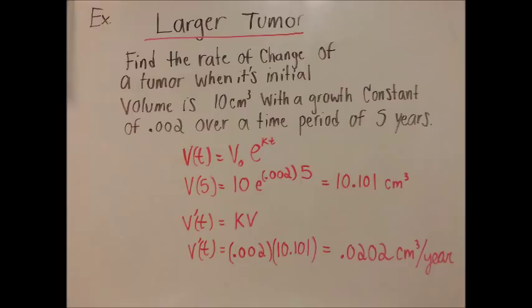Once we plug in K, which is 0.002, and V, which is 10.101, we'll get the answer 0.0202 centimeters cubed, which would mean that the tumor grows 0.0202 centimeters cubed per year.